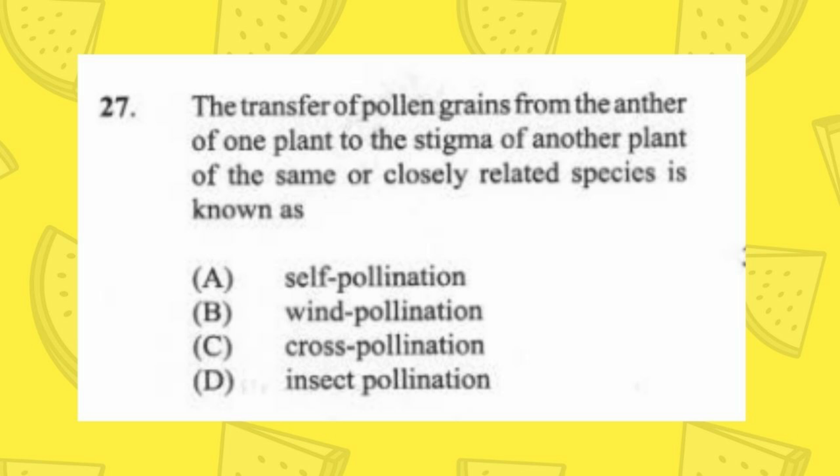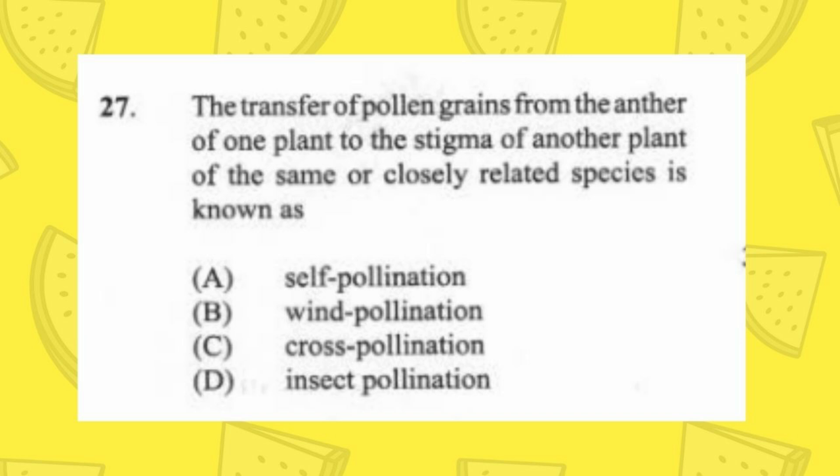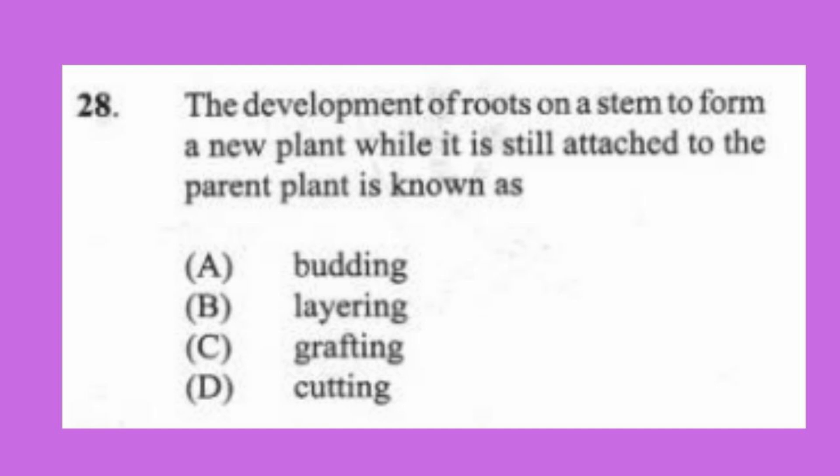Question 27: The transfer of pollen grains from the anther of one plant to the stigma of another plant of the same or closely related species is known as (a) self-pollination, (b) wind pollination, (c) cross-pollination, (d) insect pollination. The answer is C, cross-pollination. Once two plants are involved in the process, that is cross-pollination.